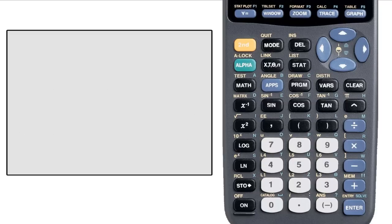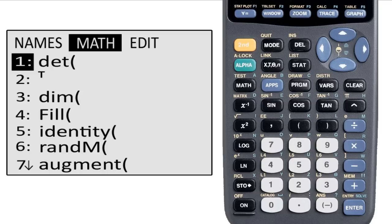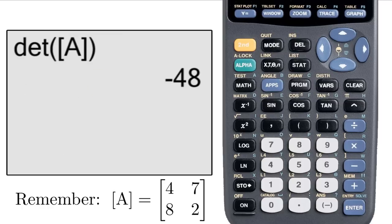Now for the functions regarding matrices. Go back to the matrix menu and go to the second page. You'll see a list of commands. The first is the determinant command. You can see that it looks like any other function. You select it and it brings you to the home screen. You put a matrix inside of it and it tells you the determinant.